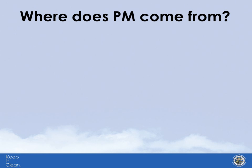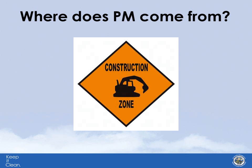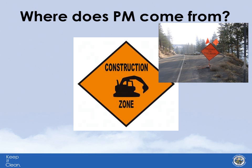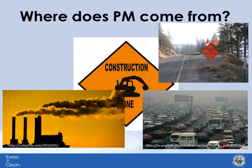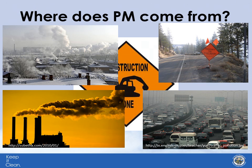So where does particulate matter come from? PM10, or coarse particles, come from crushing or grinding operations and dust from construction or unpaved roads. Fine particulates come from combustion activities including wildfires, power plants, some industrial processes, motor vehicles, and wood burning such as in your fireplace or wood stove.